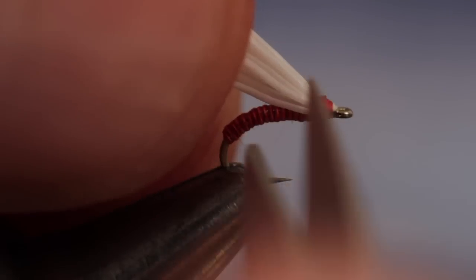Lift the remaining deer hair up just a bit and snip it to form wings, about a half a hook shank in length.